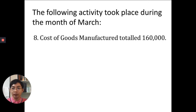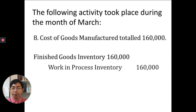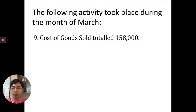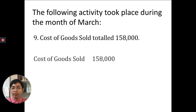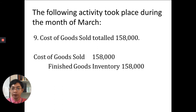Number eight: cost of goods manufactured totaled $160,000. We transfer it from work in process to finished goods — debit finished goods inventory, credit work in process inventory $160,000. Then, cost of goods sold totaled $158,000, so we transfer from finished goods — debit cost of goods sold, credit finished goods inventory $158,000.